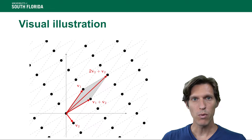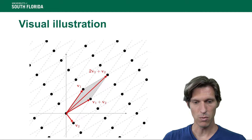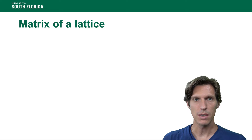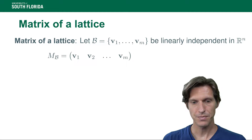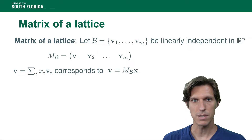Usually the way we represent lattices, at least in dimensions that allow a visual representation, is by identifying the lattice vectors by points. So all the dark dots here are lattice points of the lattice generated by v1 and v2. A basis of a lattice is usually represented by a matrix, much like the use of matrices we saw in our recap on linear algebra. So assume we have a basis given by m linearly independent vectors of R to the n; the matrix of this basis contains the basis vectors as columns. To express a linear combination of these basis vectors, we use a matrix-vector product between the matrix of the basis and the vector representing the coordinates.